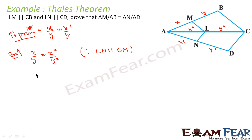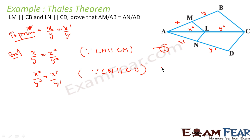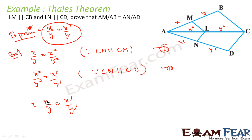Second, since LM is parallel to CB, I can say x-not by y-not is equal to x-dash by y-dash. This is equation 2. Comparing equations 1 and 2, removing x-not by y-not, I get x by y is equal to x-dash by y-dash, and that is what I was supposed to prove.